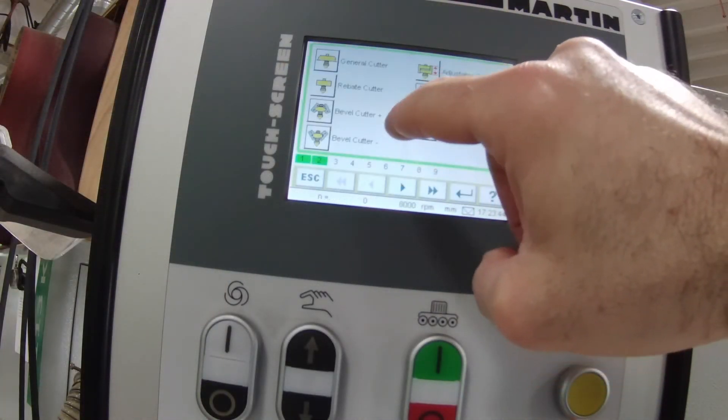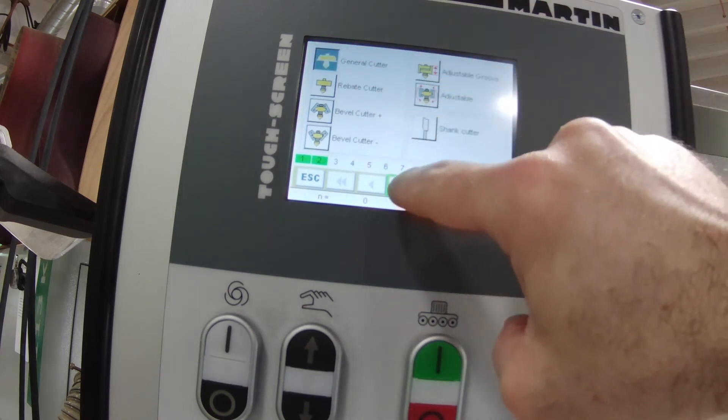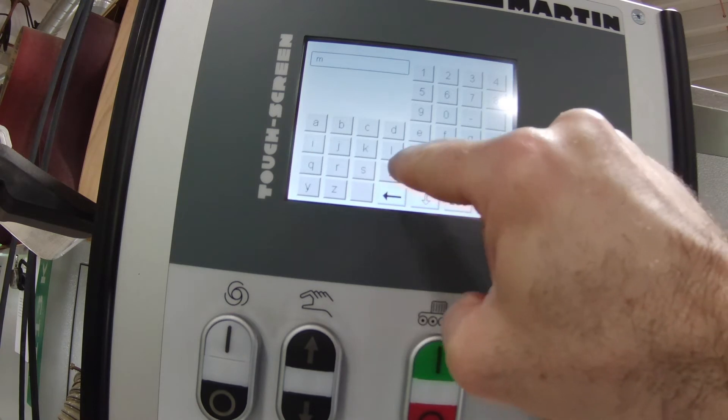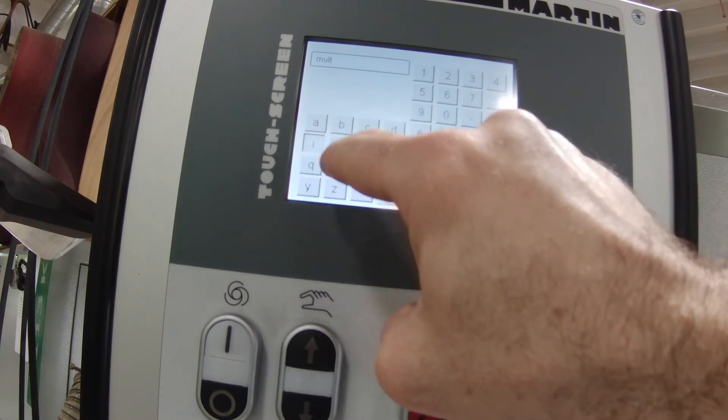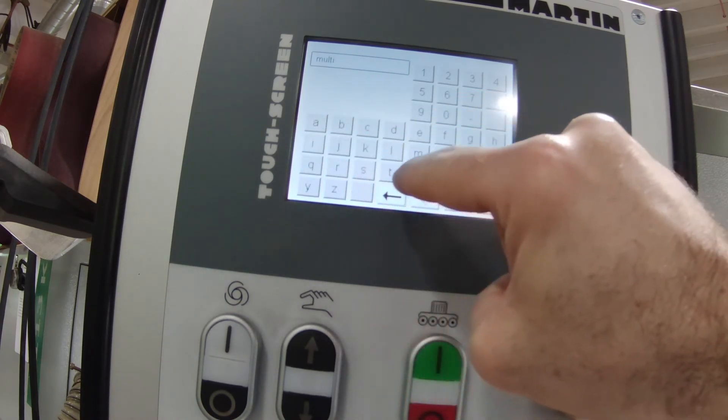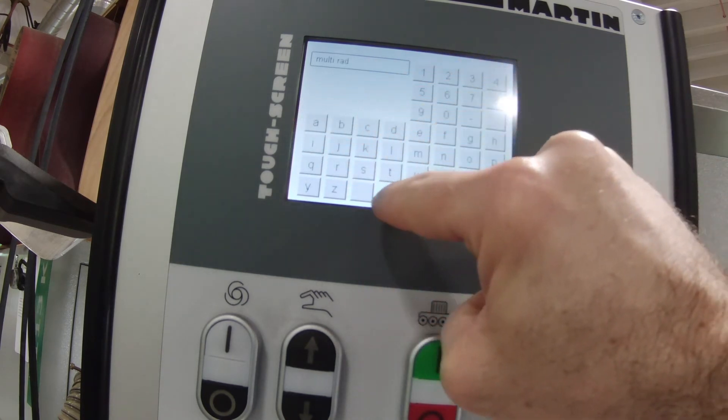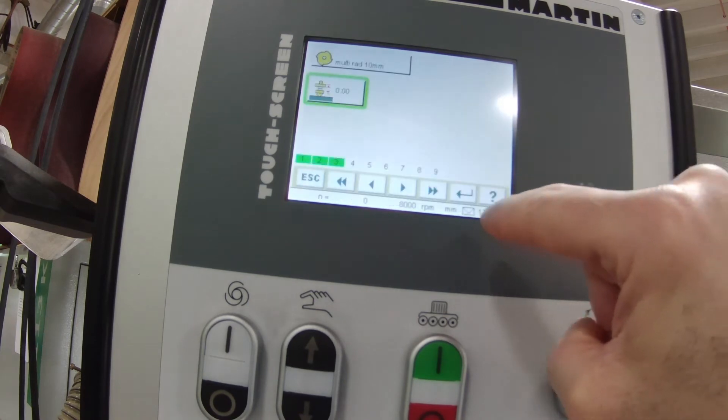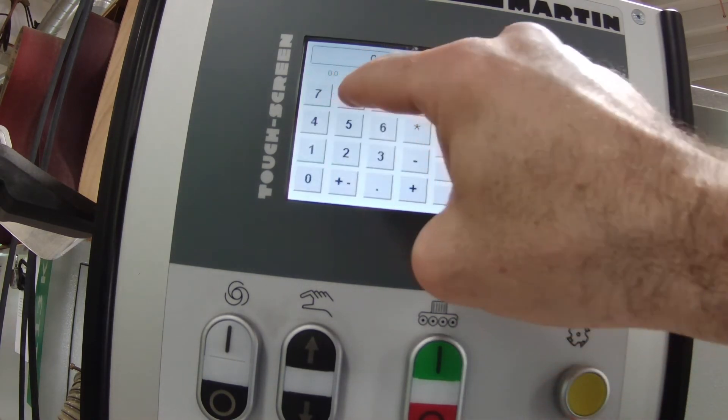So now I'm going to add a cutter for the 10 millimeter bullnose. I go into the second tab to add a cutter and I hit the plus button to add a new cutter profile. It's a general cutter in this case. Go to the next screen and I give it a name. In this case, I'm going to call it multi radius 10 millimeter. And I'll make a new entry for each of the configurations that this cutter can do of the various radii.